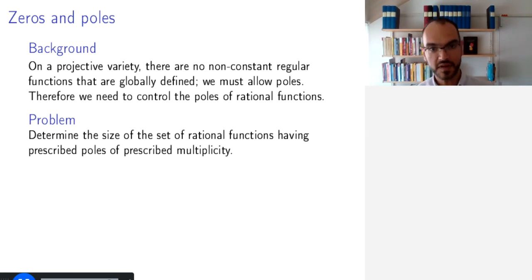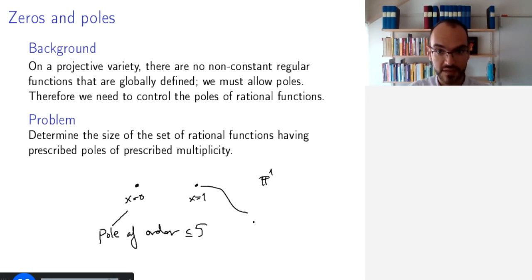So the problem is to determine the size of the set of rational functions having prescribed poles of prescribed multiplicity. So say I take P1, the most simple example of a projective curve, and then I have points x equals 0 and x equals 1. And say that at x equals 0, I require my function to have a pole of order at most 5. And here I wanted to have a zero of order at least 2, for example. So the question is how many such rational functions do there exist?